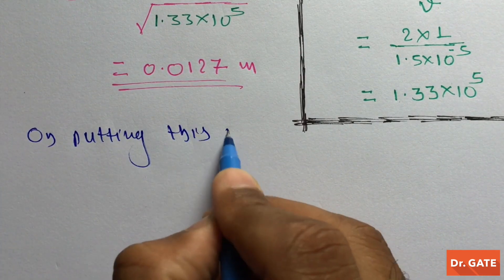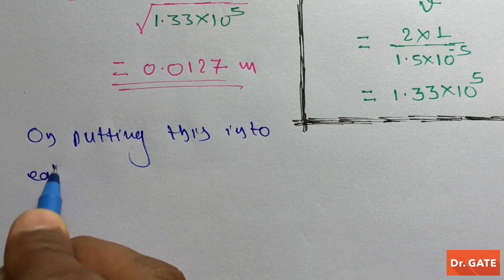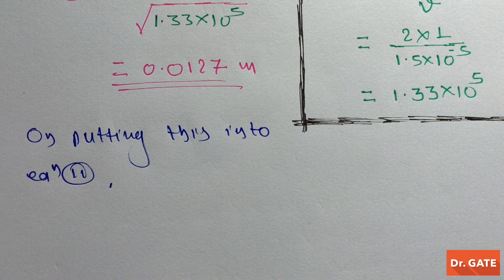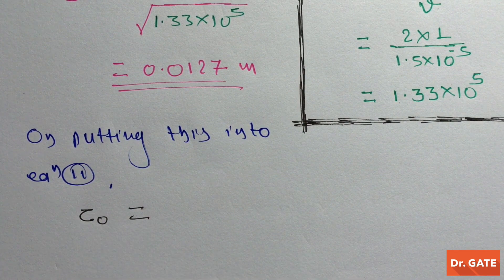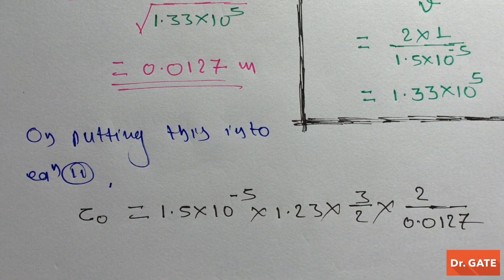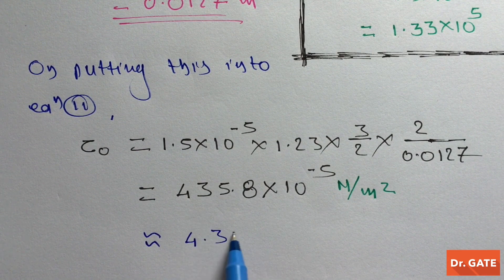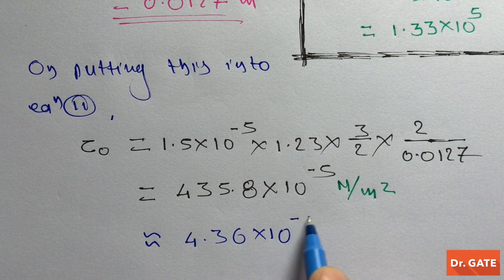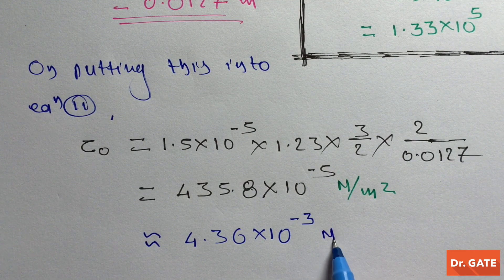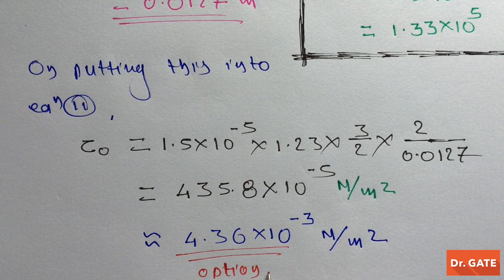Since we have the Reynolds number, we can get the boundary layer thickness at x = 1 m, which is 0.0127 m. On putting this into equation 2, we get the wall shear stress at x = 1 m, which is approximately 4.36 × 10⁻³ N/m². So option C is correct.